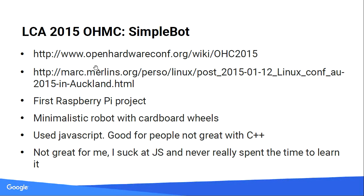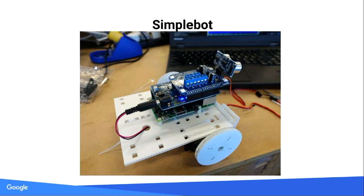SimpleBot was the first bot — you've probably seen those little cars running around, and one of which is here. It was the first version, very nicely made out of cut cardboard. It used a Raspberry Pi and, I think, Node.js.